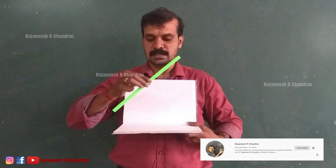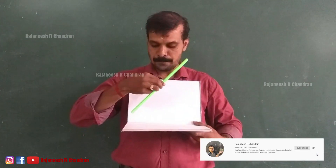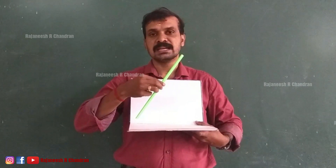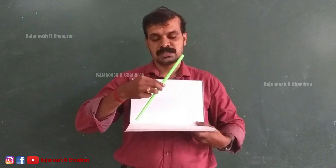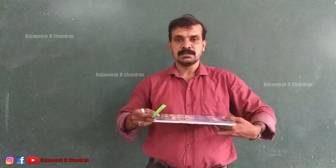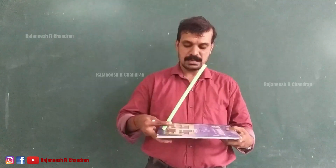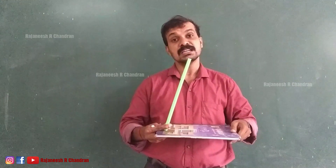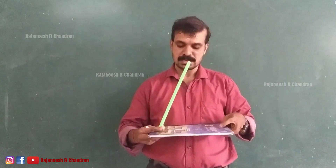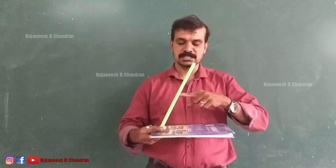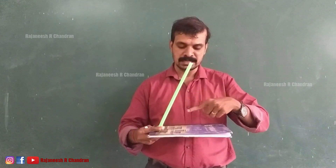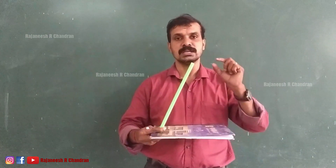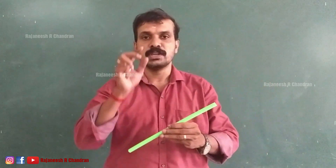This is your HP and this is VP. This line is now parallel to VP and inclined with the HP. What is inclination? If this is HP and this is the line, this angle is known as the inclination of the line with HP. This line is parallel to VP and inclined at an angle with the HP, and this angle gives you the inclination of the line with HP.